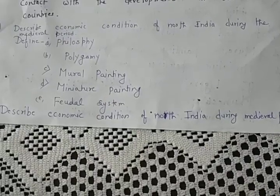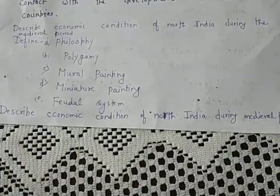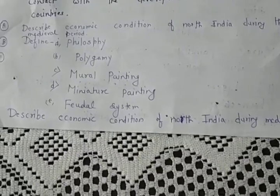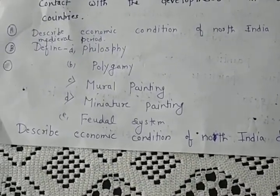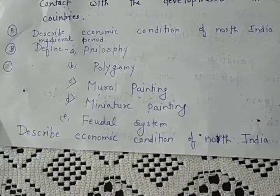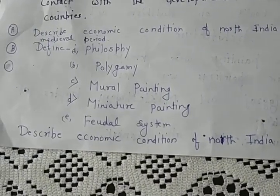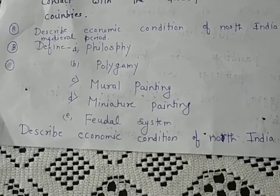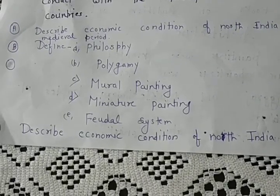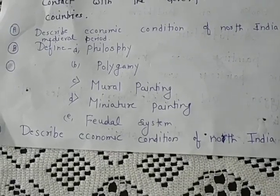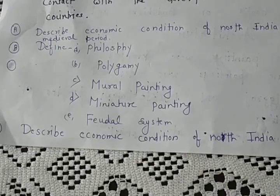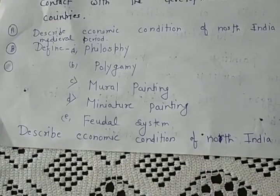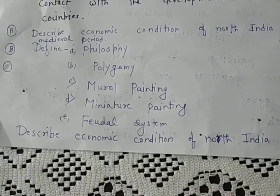Now let us define some terms. Philosophy is the study of the nature or causes and principles of reality. Polygamy is the practice of having more than one wife.